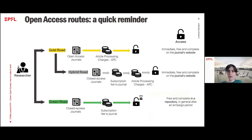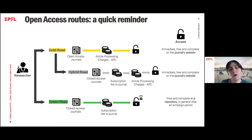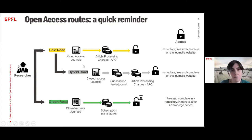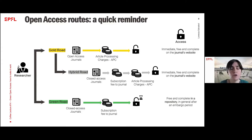I would like to start with a quick reminder. You might already know how to make your article Open Access — there are two main paths. The first one is the so-called Gold Road: you publish your article in an Open Access journal, or in a closed-access journal that offers Open Access at the article level. In both cases, you pay a fee — article processing charges — and your article will be immediately and freely available on the journal website.